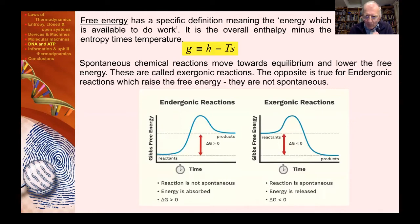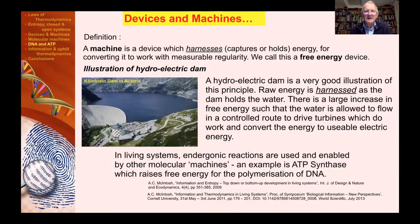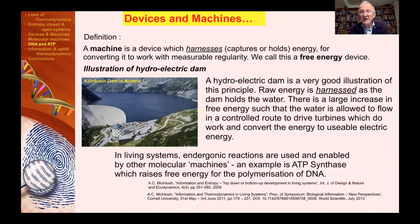This point is now hugely relevant in the polymerizing of DNA. I said that a machine is a device which harnesses the energy for converting it to do work. A good illustration of this is a hydroelectric dam. Raw energy is harnessed as the dam holds the water. There is a large increase in the free energy as the water piles up behind the dam. Then when it flows, it does work in driving turbines, usually to convert the water flow to electrical energy. Well, in living systems it's the same matter. You've got to have an endogenic system initially to actually store the energy, and then you need to let the energy go to do the polymerizing of the DNA.